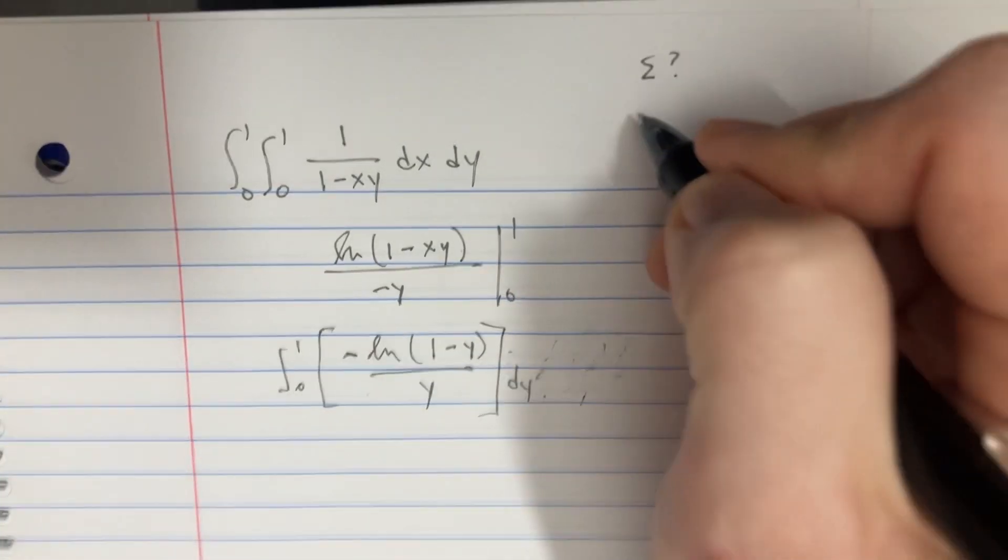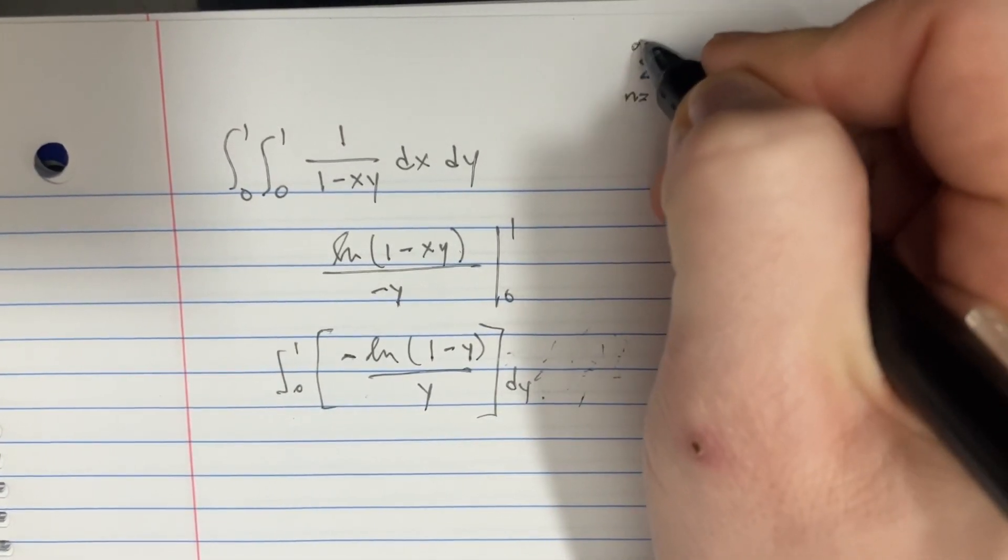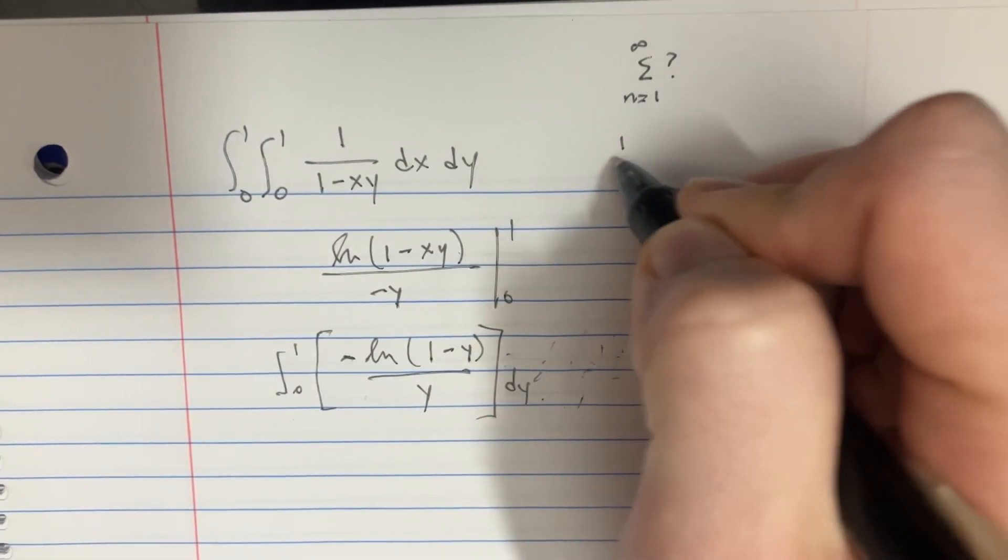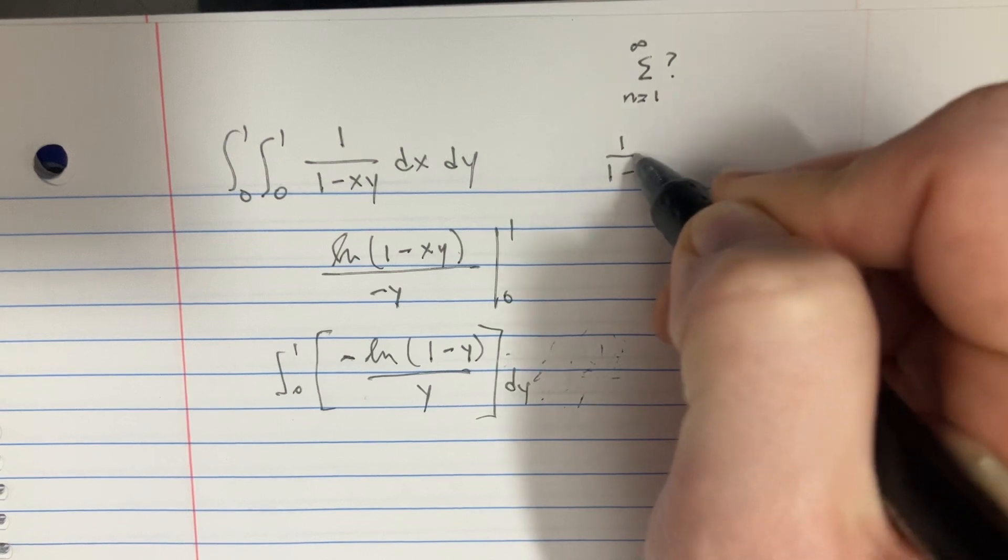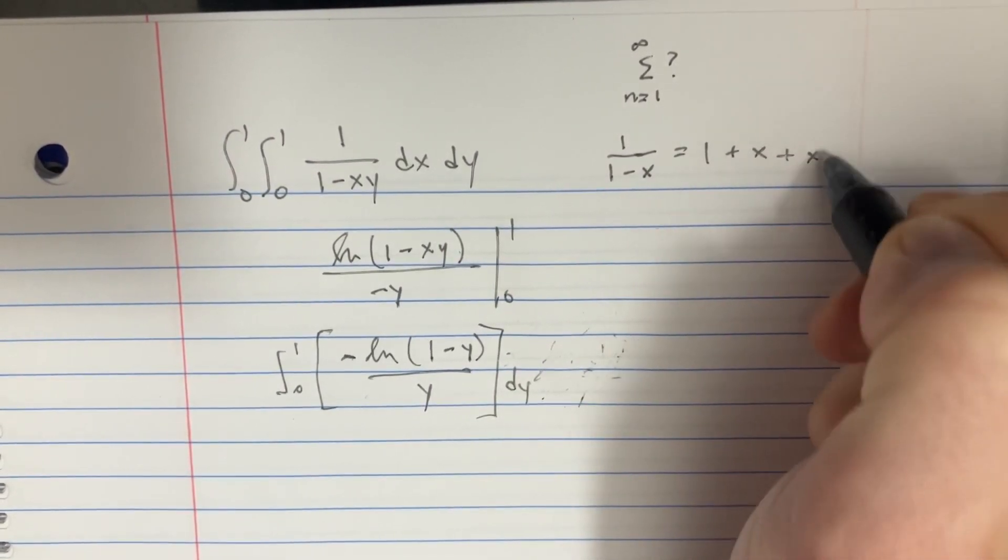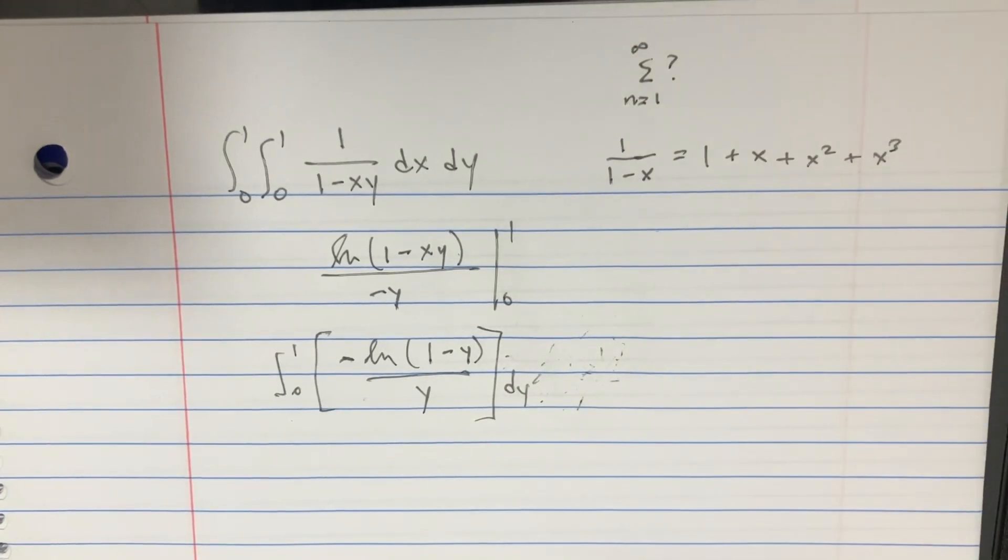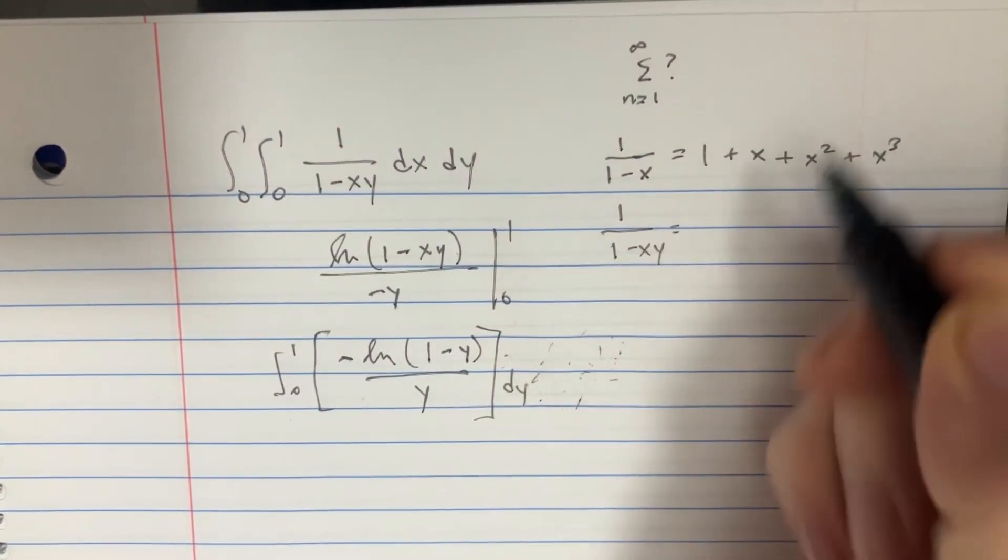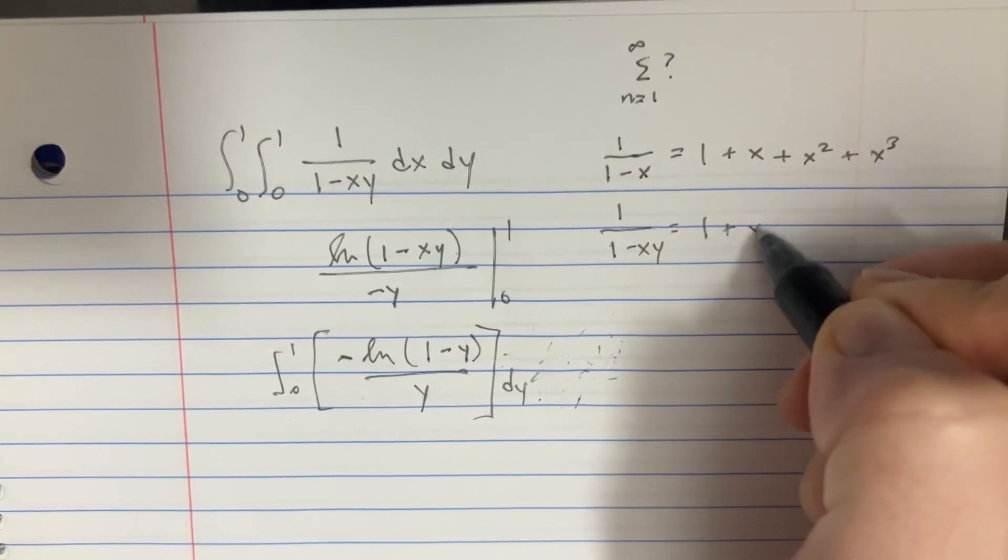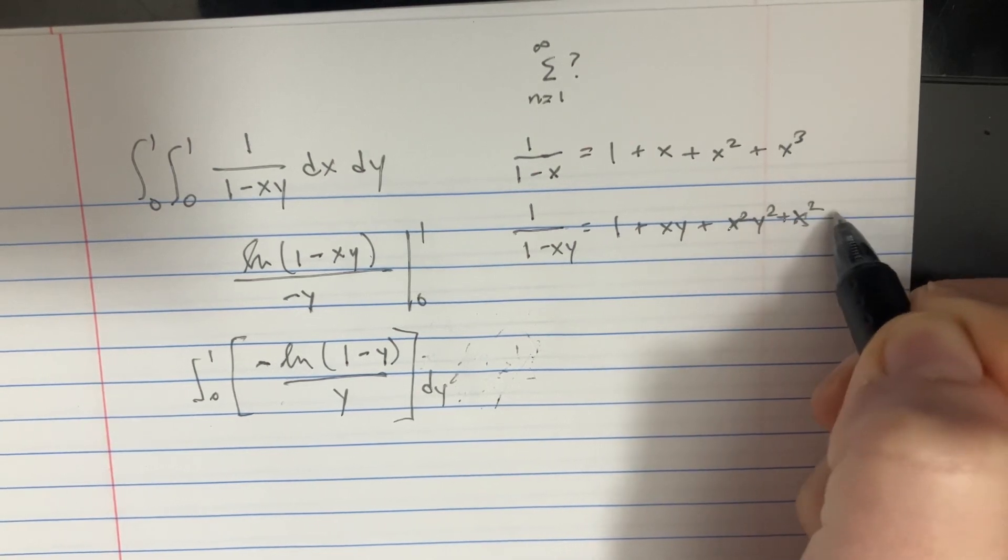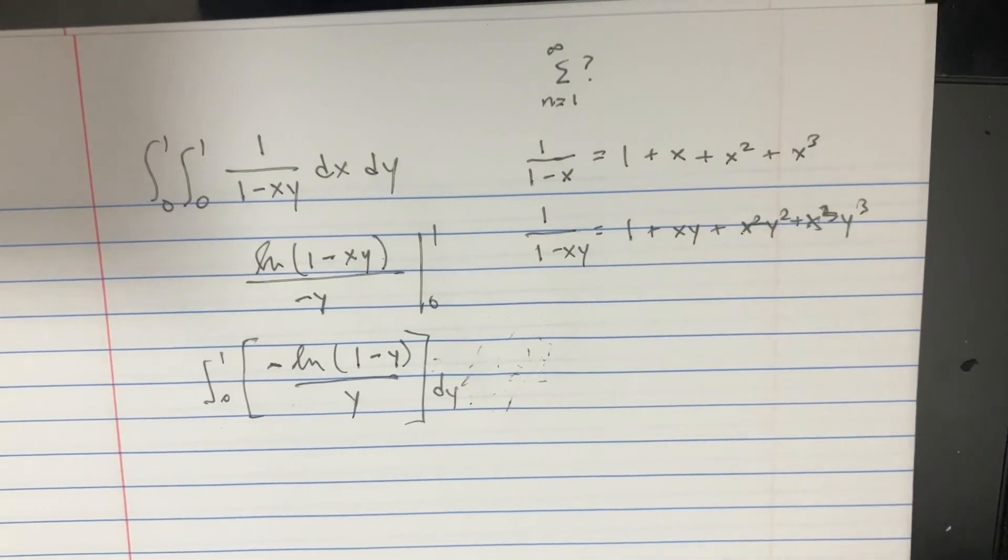Series? Sums? n equals 1 to infinity? What's going on here? Well, look, this is kind of like this. Remember that 1/(1-x), if we do this, doesn't that equal 1 plus x plus x squared plus x to the third? So if I have 1 over 1 minus xy, doesn't that just equal 1 plus xy plus x squared y squared plus x to the third y to the third, and stuff like that?